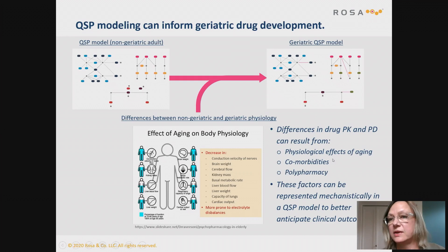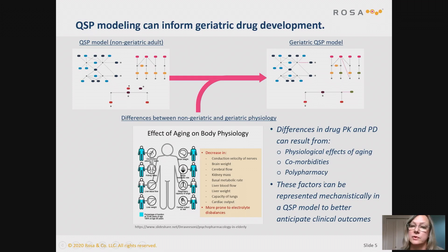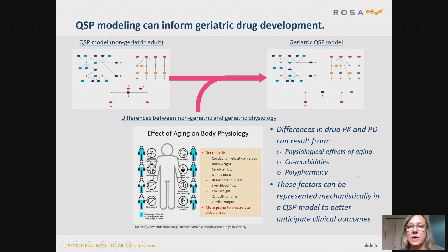There are also comorbidities and polypharmacy to consider. As we've discussed at length today, these aspects introduce a lot of heterogeneity and a lot of combinatorics. When you really think about the different types of patients out there, having different virtual patients to explore the impact of these differences within the population would be really helpful for better anticipating clinical outcomes in this population.